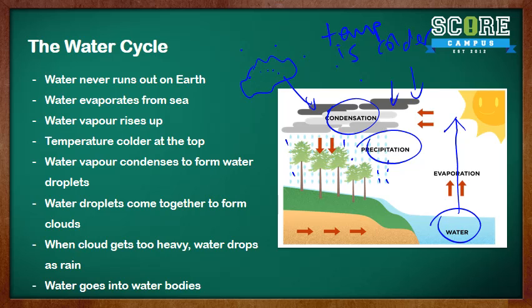This rain then seeps back into the land and goes back into the sea, which will then evaporate back up. And that's the water cycle.